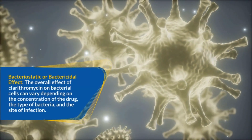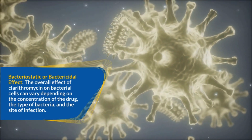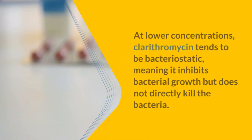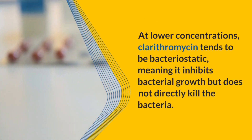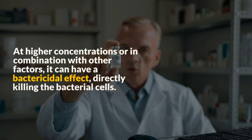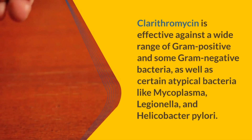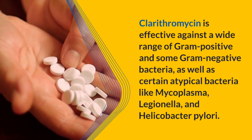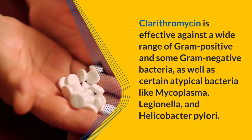Bacteriostatic or bactericidal effect. The overall effect of clarithromycin on bacterial cells can vary depending on the concentration of the drug, the type of bacteria, and the site of infection. At lower concentrations, clarithromycin tends to be bacteriostatic, meaning it inhibits bacterial growth but does not directly kill the bacteria. At higher concentrations or in combination with other factors, it can have a bactericidal effect, directly killing the bacterial cells. Clarithromycin is effective against a wide range of gram-positive and some gram-negative bacteria, as well as certain atypical bacteria like mycoplasma, legionella, and helicobacter pylori.